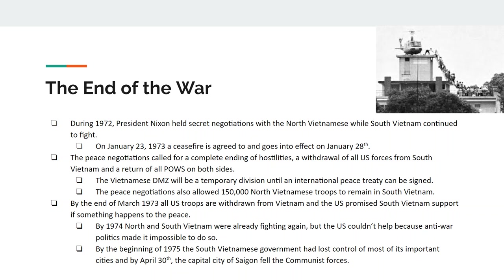There is absolutely no way South Vietnam can stand on its own two feet. The United States promises support if something happens, but by 1974 North and South Vietnam are already fighting again. The U.S. promise to help South Vietnam cannot be fulfilled because of the enormous anti-war sentiment in the country. In 1975, the South Vietnamese government loses control of all its cities, and by April 30th the capital city falls to communist forces.